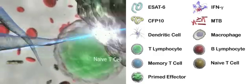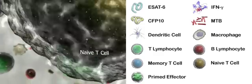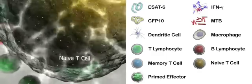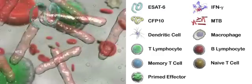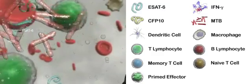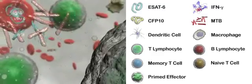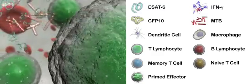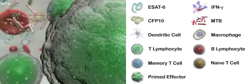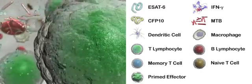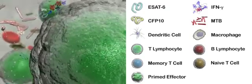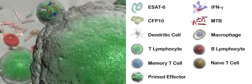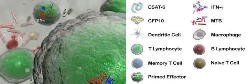Antigen is specifically presented to naive T cells. The primary activation process will evoke a cell-mediated immune response within 3 to 5 days, and it is possible to measure interferon gamma produced in response to specific Mycobacterium tuberculosis antigens.